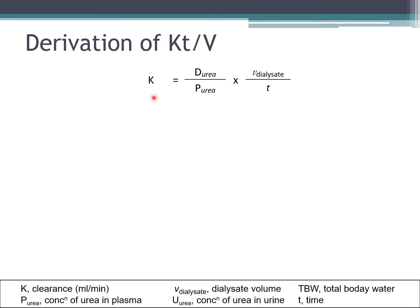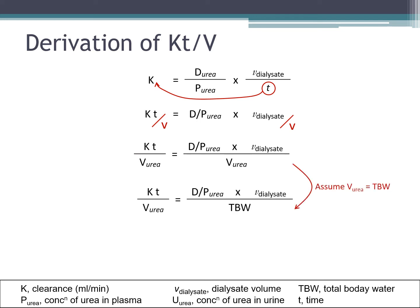And now that we know how to calculate K, just by a few simple rearrangements of the formula, you bring T over, you divide both sides of the equation by V, which is the volume of distribution of urea, and you assume that the volume of distribution of urea is equals to the total body water, you get this formula.